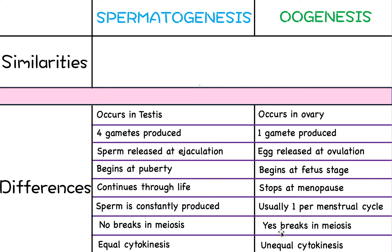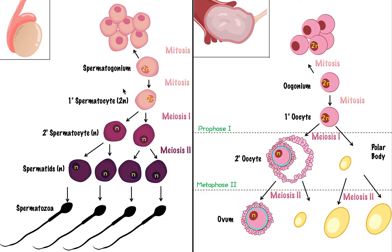Now let's go to the similarities. Both processes involve mitosis: the stem cell undergoes mitosis to produce many copies, because we need millions of sperm or many potential egg cells. If we only had one stem cell we could only make four sperm, but we need millions, so the stem cells divide and divide. The same is true on the egg side — they divide to make many of them. So both processes involve mitosis.